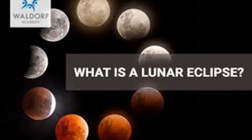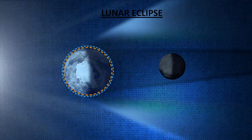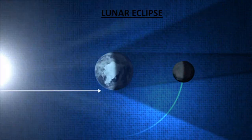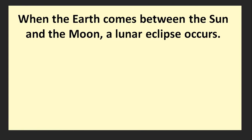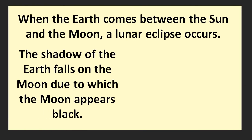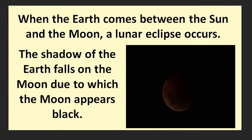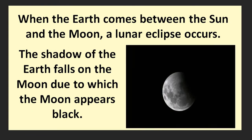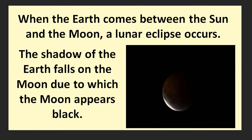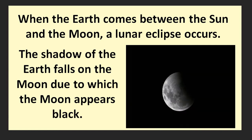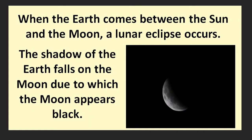Next is Lunar Eclipse. Look at this screen. During revolutions, when the Earth comes between the sun and the moon, Lunar Eclipse is formed. In this eclipse, the shadow of the Earth falls on the moon, due to which the moon appears dark — this condition is called Lunar Eclipse. As you can see in this video clip, the size of the moon keeps on decreasing because it is covered by the shadow of the Earth, and people on the Earth will be able to see the moon like this.